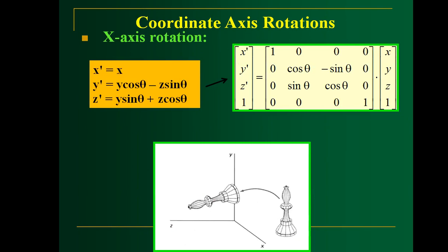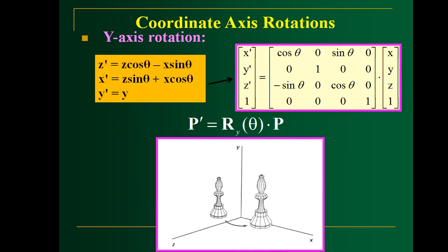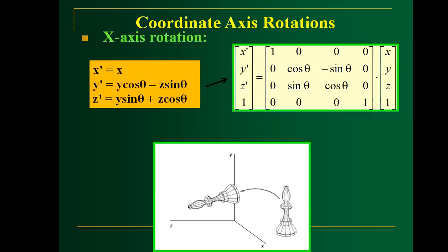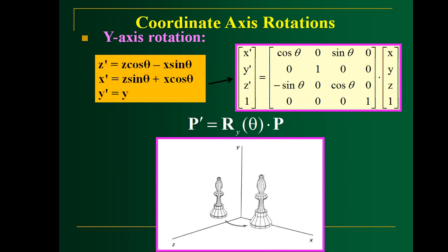For Y-axis rotation, y' = y, z' = z·cosθ - x·sinθ, and x' = z·sinθ + x·cosθ. That is what is shown here and represented in matrix form. The general equation is P' = R(θ) · P. For X-axis rotation specifically, P' = Rx(θ) · P, and similarly for the other axis rotations.